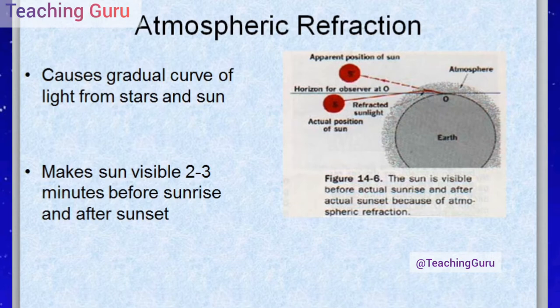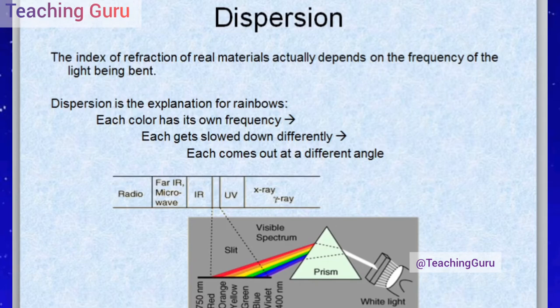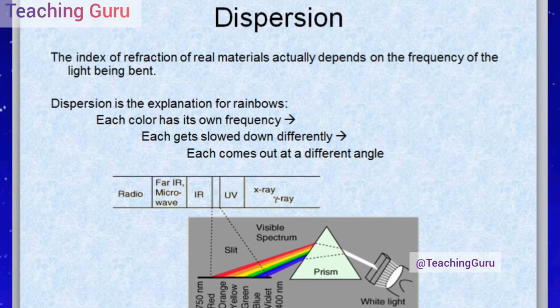Next is dispersion. The index of refraction of real materials actually depends on the frequency of light being bent. A key example of dispersion is the rainbow — each color has its own frequency, each gets slowed down differently, and each comes out at a different angle. When white light strikes a prism, it splits into all the rainbow colors. The splitting of white light through a prism is called dispersion.